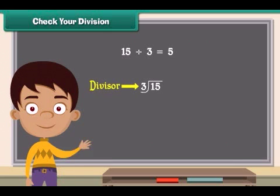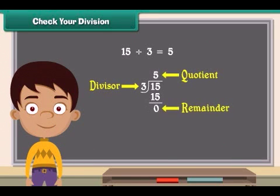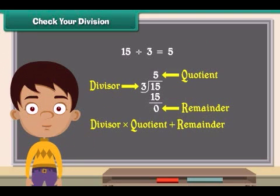Here divisor is 3, quotient is 5, and remainder is 0. To check the answer we need to multiply divisor and the quotient, and then add the remainder to the answer.